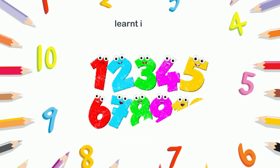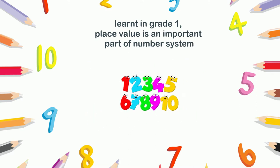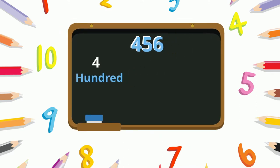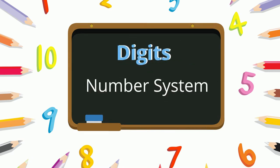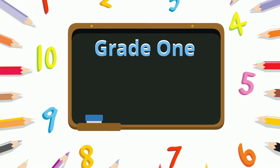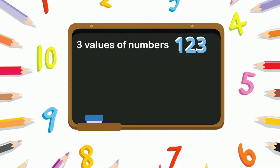As you have learned in grade 1, place value is an important part of the number system. It helps us represent all our numbers with just digits. The value of a digit in a given number depends on its position or place in that number. In grade 1 you learnt about two place values — units and tens. Today you will learn about three place values: units, tens, and hundreds.